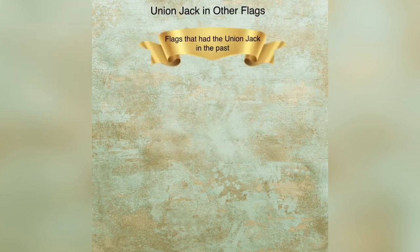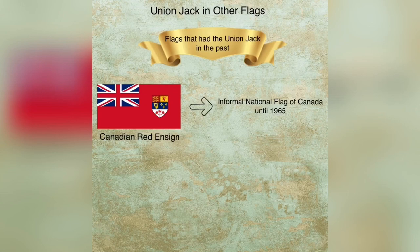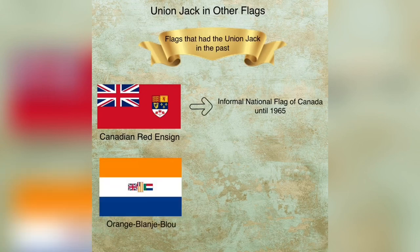Two more flags are worth mentioning here. Though these flags are of the past and have been replaced since then, they also bore the Union Jack. This includes the Canadian Red Ensign, which was the civil ensign of Canada and also their informal national flag until being replaced in the year 1965, and the other is the Orange Blanche Blau, the national flag of South Africa from 1928 to 1994.